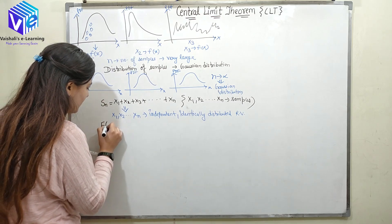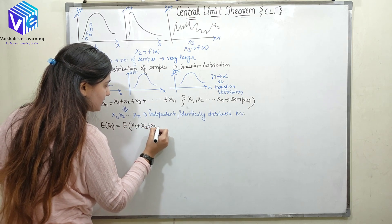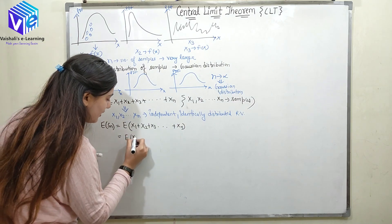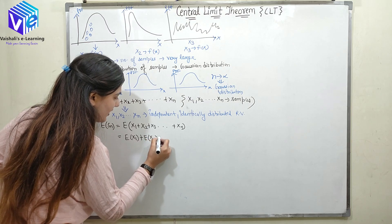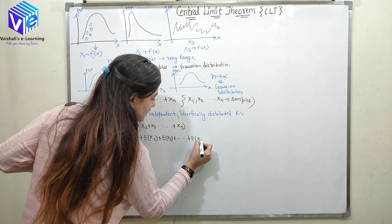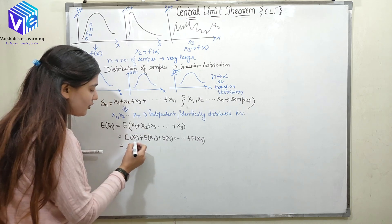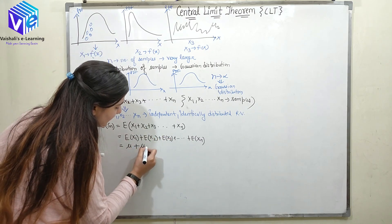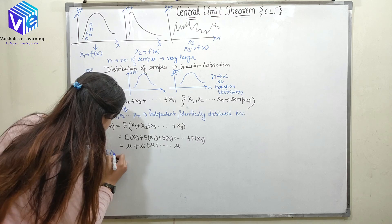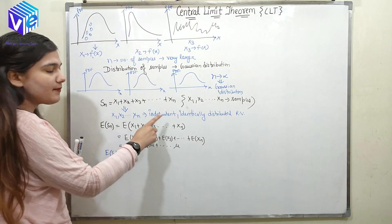So the only condition to prove the central limit theorem is that the samples are IID. Now if I find out the mean, the mean of Sn is calculated as mean of x1 + x2 + x3 + ... + xn. Since expectation E is a linear function, I can write it as E(x1) + E(x2) + ... + E(xn). Each E(xi) equals μ, so E(Sn) = nμ.